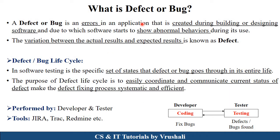The first point is: what exactly is a defect or bug? While designing or developing a particular product, some errors occur. Due to those errors, your project does not work properly. This is called a defect or bug. Basically, the variation between the actual result and the expected result is known as a defect.